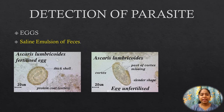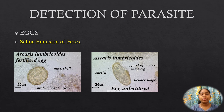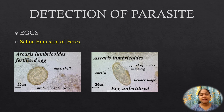Detection of eggs. Definitive diagnosis of Ascariasis is made by demonstration of eggs in the feces. The eggs can be readily seen by microscopic examination of a saline emulsion of feces. Both fertilized and unfertilized eggs are usually present; occasionally only one type is seen. Fertilized eggs may sometimes appear decorticated — that is, the outer membrane may be absent. Unfertilized eggs are not detectable by salt flotation.